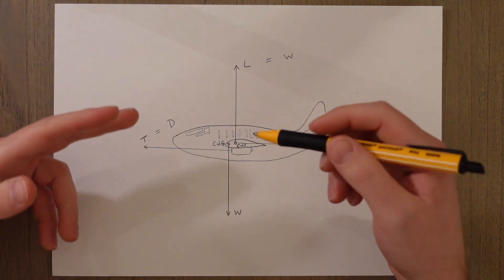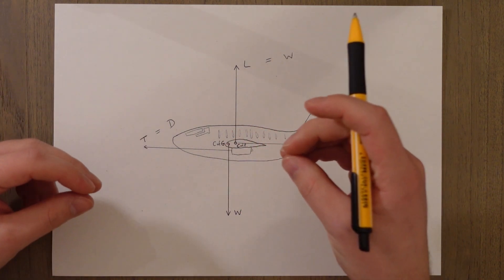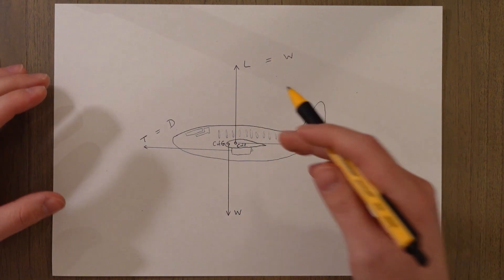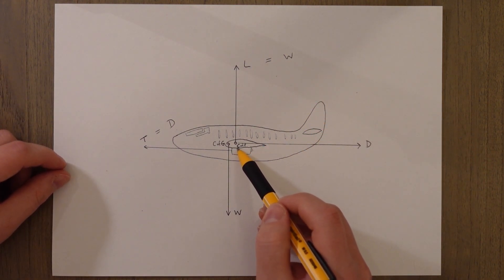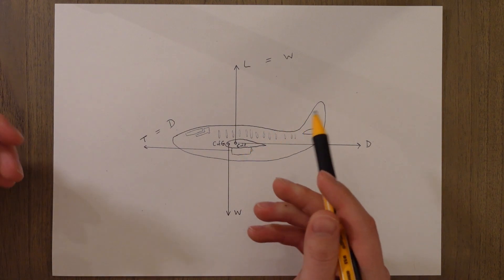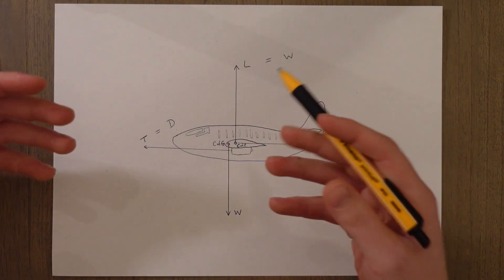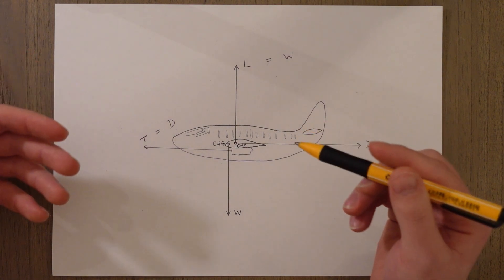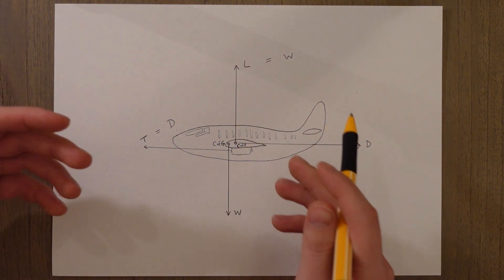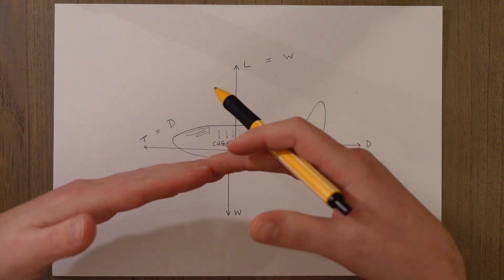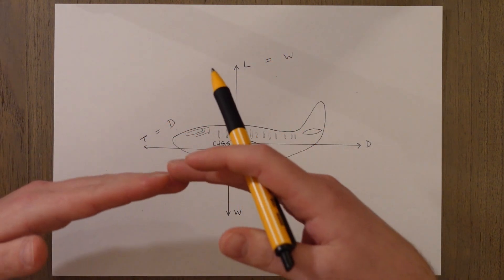In reality though the four forces act in slightly different locations. If we look at the aircraft in a bit more detail we can see that the lift acts through the center of pressure, the CofP, which is where the aerodynamic forces of the wing act. The weight then acts through the center of gravity, the fulcrum point, the middle of the seesaw if you like.